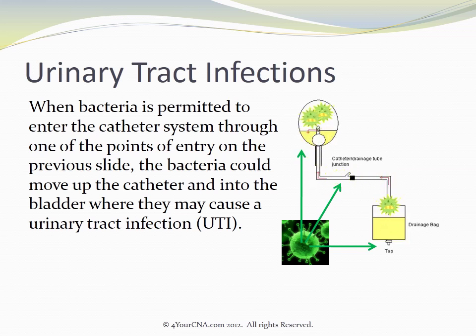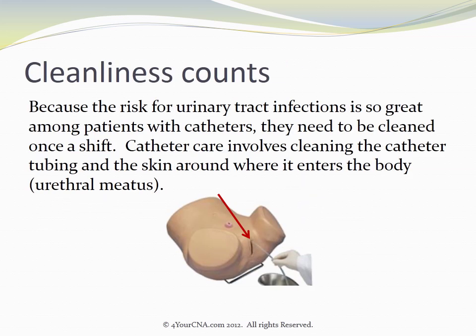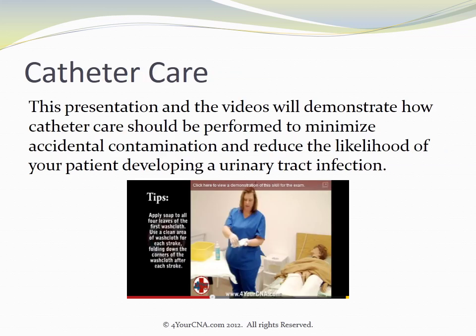When bacteria are permitted to enter the catheter system through one of those points of entry, the bacteria could move up the catheter and into the bladder, where they may cause a urinary tract infection, better known as a UTI. Because the risk for urinary tract infections is so great among patients with catheters, they need to be cleaned once a shift. Catheter care involves cleaning the catheter tubing and the skin around where it enters the body, an area known as the urethral meatus. This presentation and the videos will demonstrate how catheter care should be performed to minimize accidental contamination and reduce the likelihood of your patient developing a urinary tract infection.